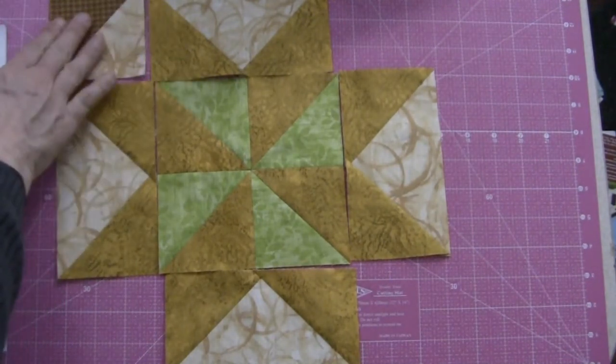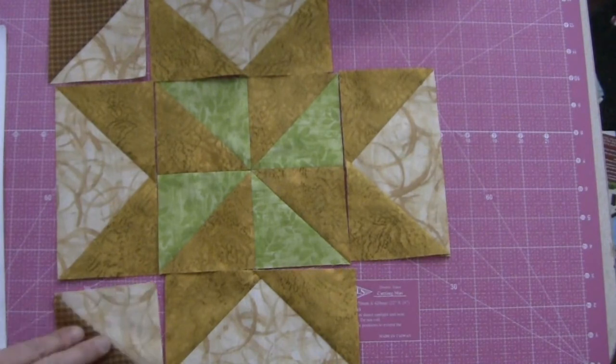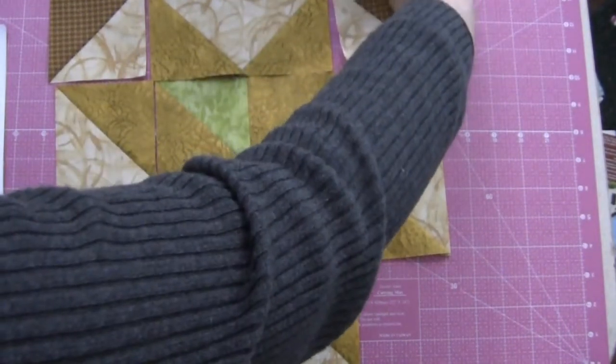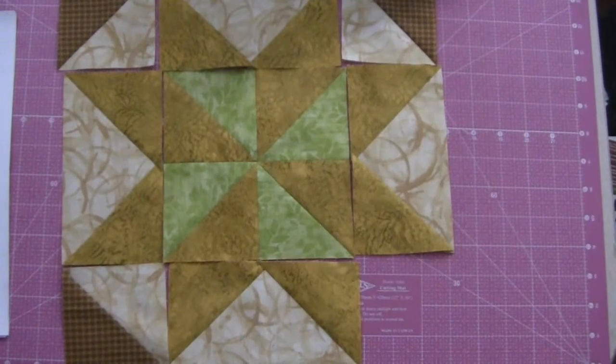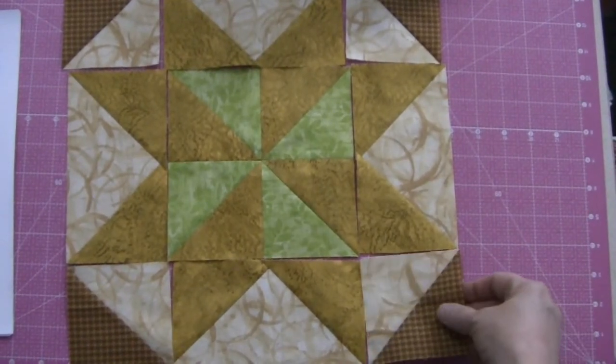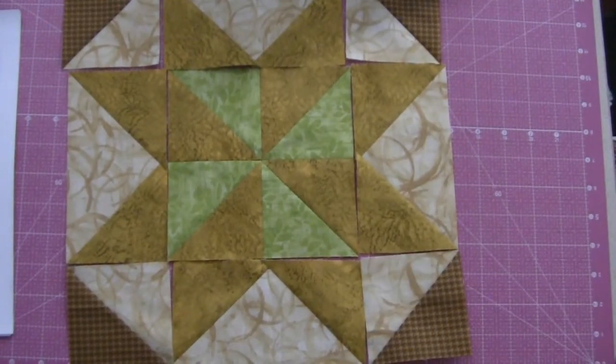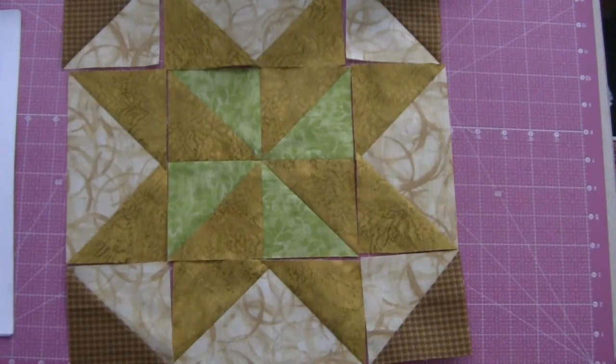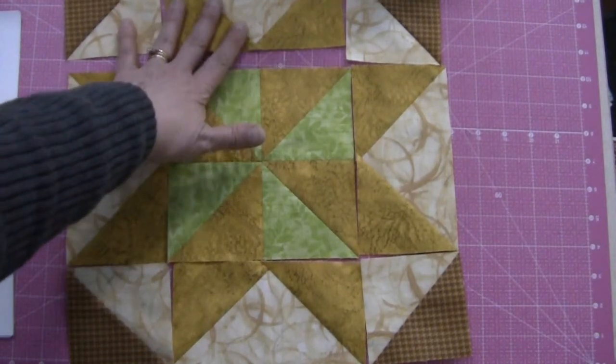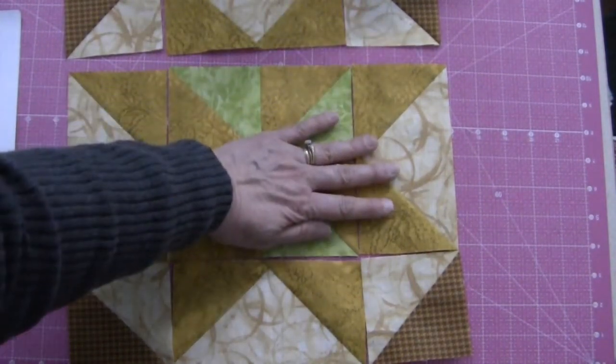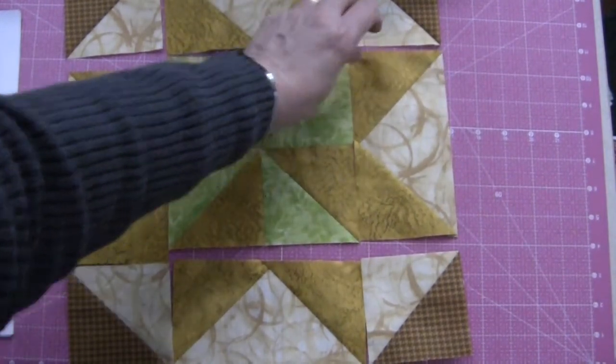And arrange the other half-square triangles we made in the outside corners. So there's the block laid out for you and now we need to just sew it together in rows. So I've got the top and bottom rows and the middle pinwheel row.